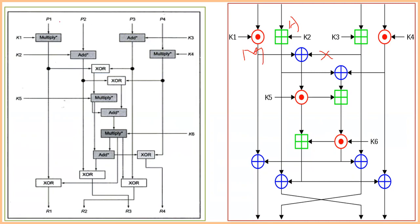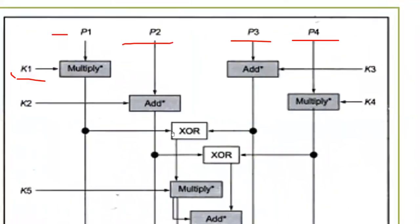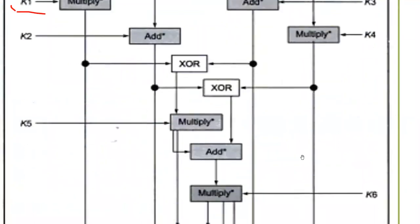The plaintext blocks P1, P2, P3, P4 are the four original 16-bit input blocks. Keys K1 through K52 are applied through the process of multiply, add, and XOR operations at each stage. This process is carried out across all rounds until the final ciphertext is produced.